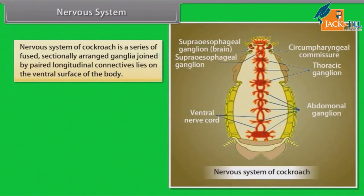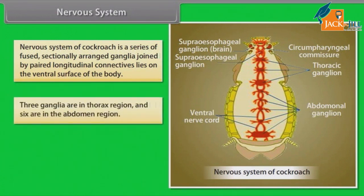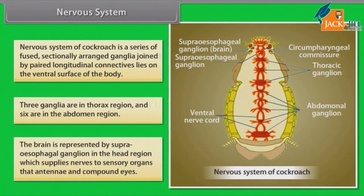Nervous System: The nervous system of cockroach is a series of fused, segmentally arranged ganglia joined by paired longitudinal connectives, lying on the ventral surface of the body. Three ganglia are in the thorax region and six are in the abdomen region. The brain is represented by the supra-oesophageal ganglion in the head region, which supplies nerves to sensory organs — the antennae and compound eyes.